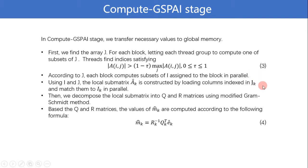Then, using I and G, the local submatrices is constructed by loading columns indexed in G_k and matching them to I_k in parallel. Then, we decompose the local submatrices into Q and R using modified Gram-Schmidt method. Based on Q and R, the values of M_k are computed according to the following formula.